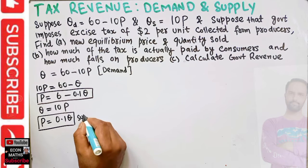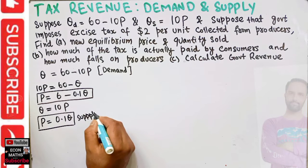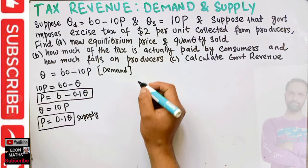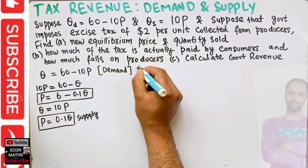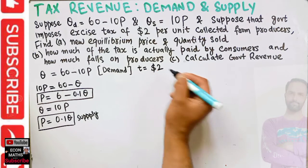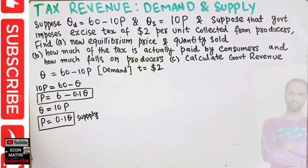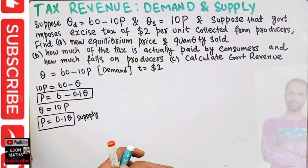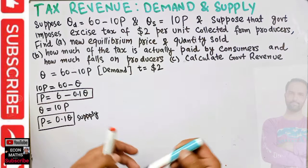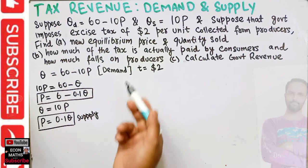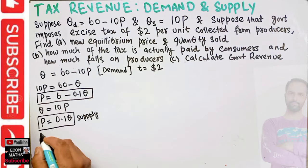The tax rate is two dollars per unit imposed on the producer. Initially, equilibrium occurs where demand equals supply.